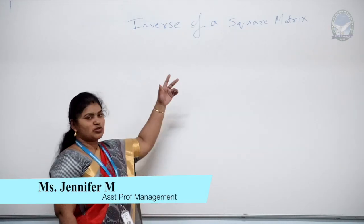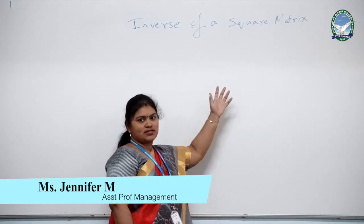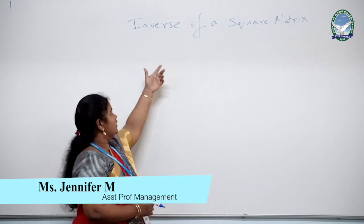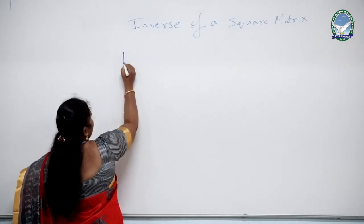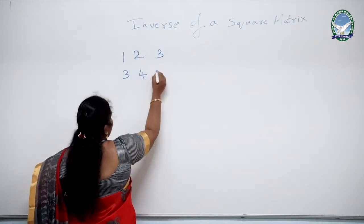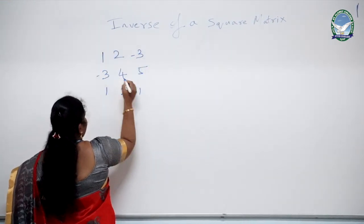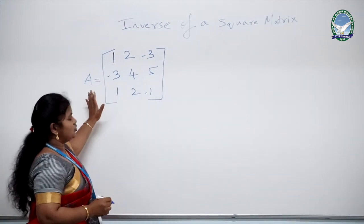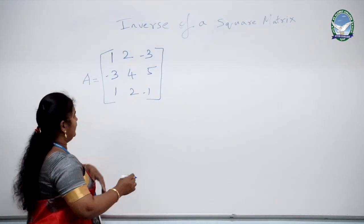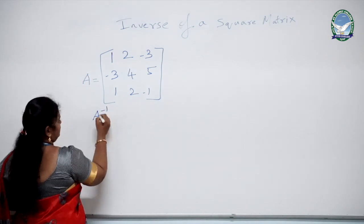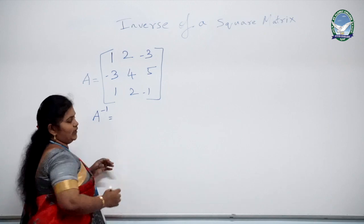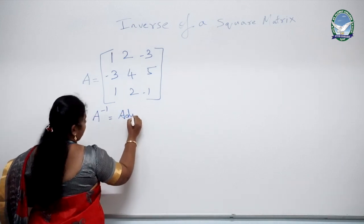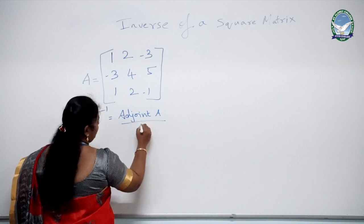Today our topic is the inverse of a square matrix. A matrix is the arrangement of numbers in rows and columns within brackets. We are going to calculate the inverse of a square matrix A, denoted as A to the power of minus 1. There is a formula involving 5 steps: the inverse equals adjoint A divided by determinant A.